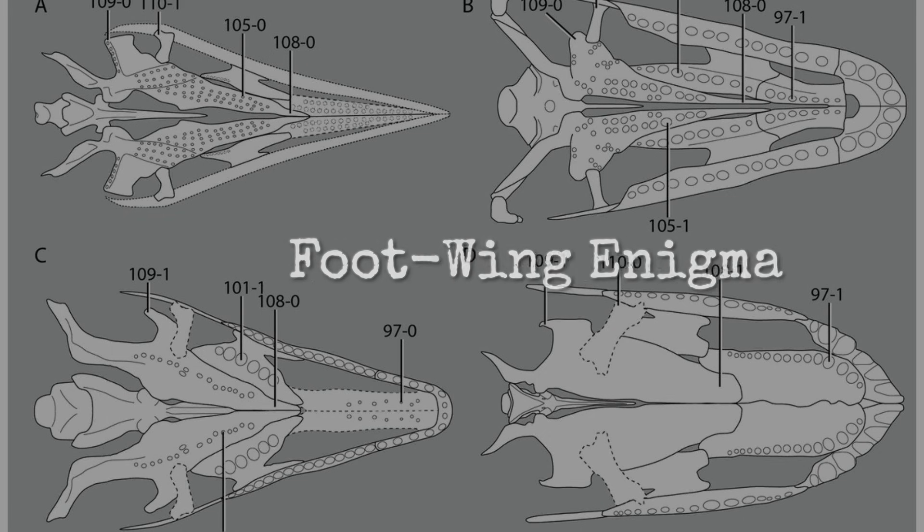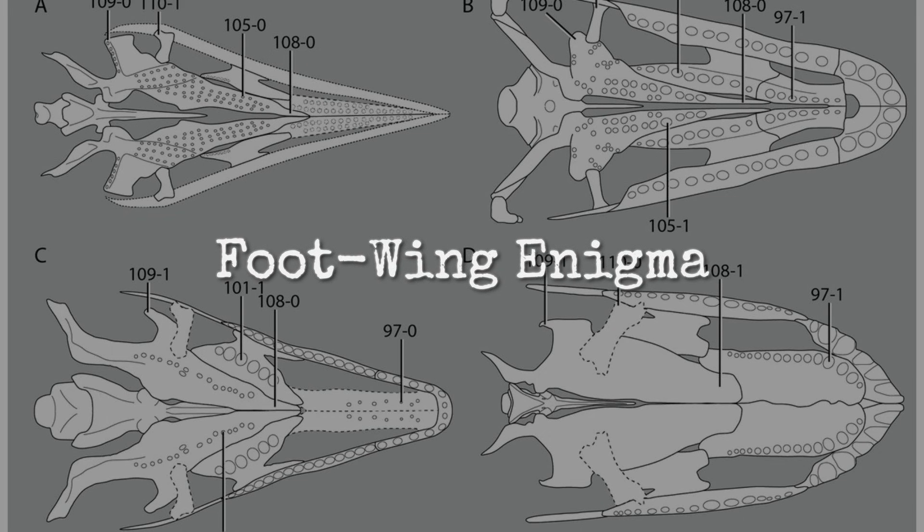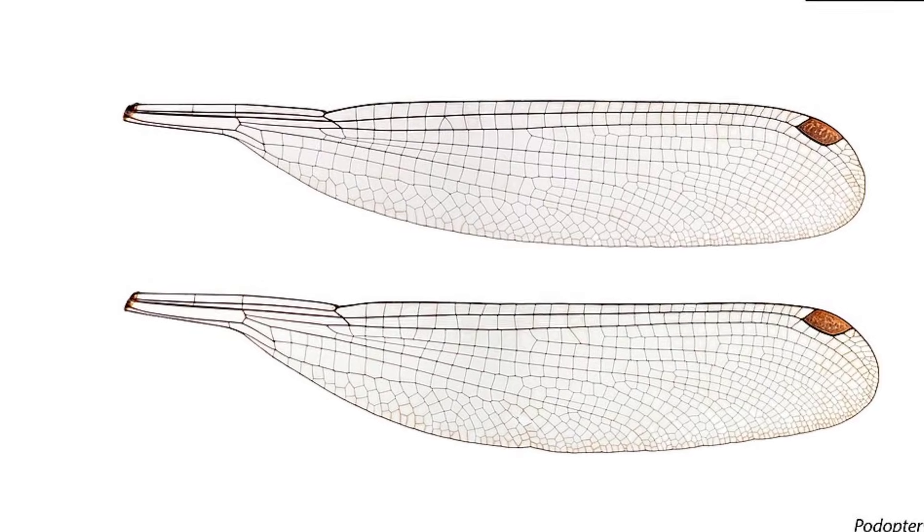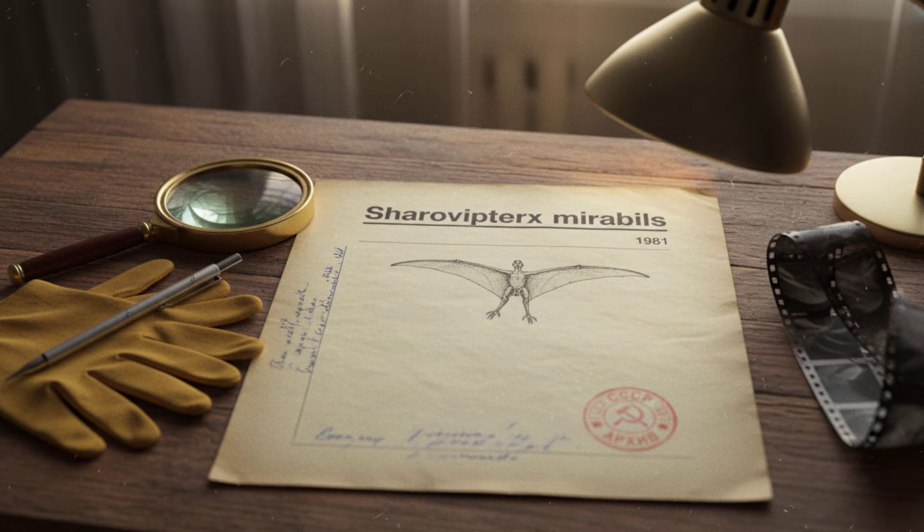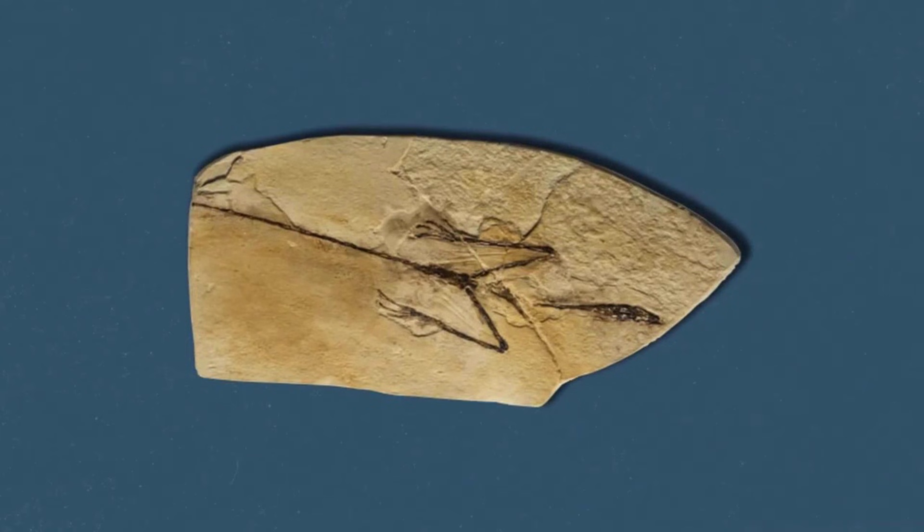He named it Podopteryx mirabilis, which means foot wing. But that name was already taken by a damselfly. So, in 1981, it was renamed Sharovipteryx mirabilis, which means Sharov's wonderful wing. Wonderful might be an overstatement.